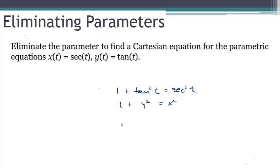Substituting x and y into this identity gives us 1 plus y squared equals x squared. Now, if we move the y squared term over to the right side of the equation, we get an interesting result.